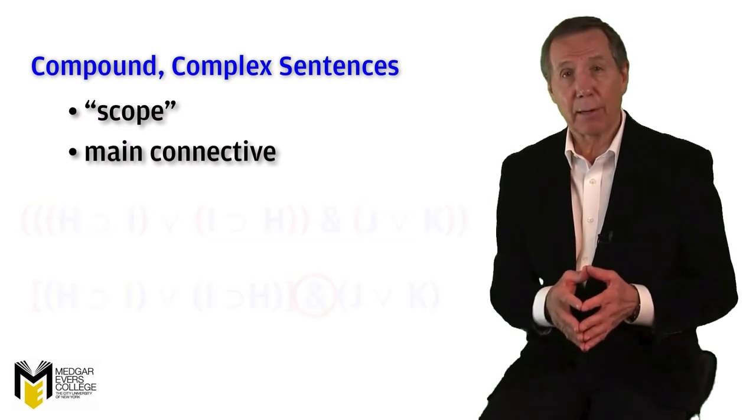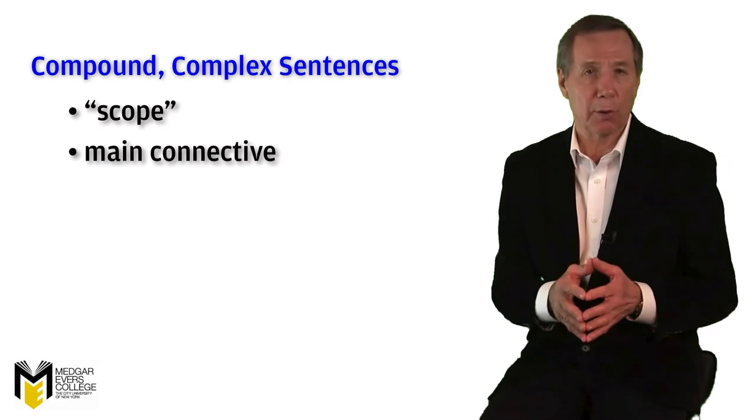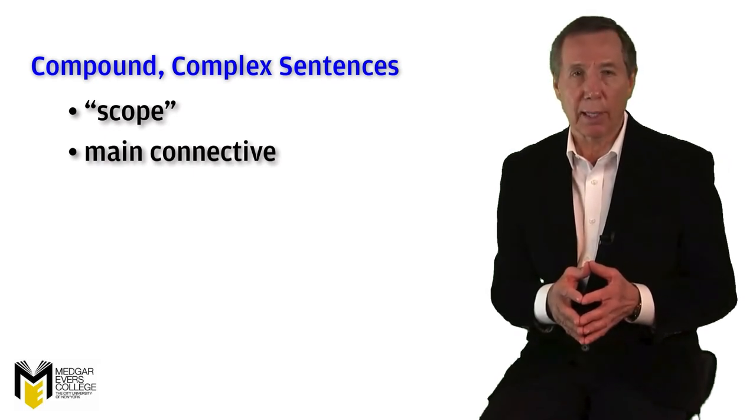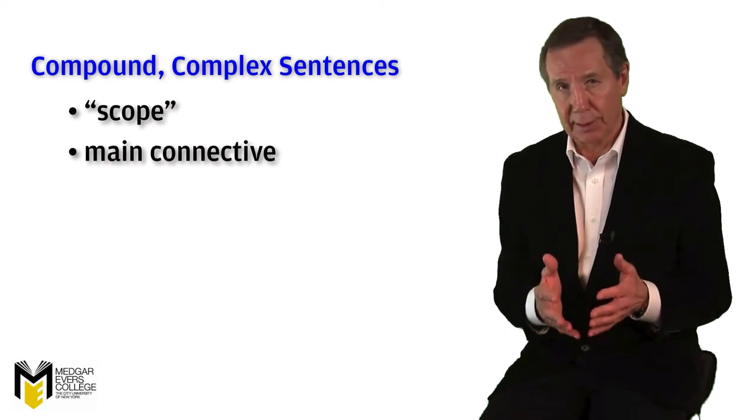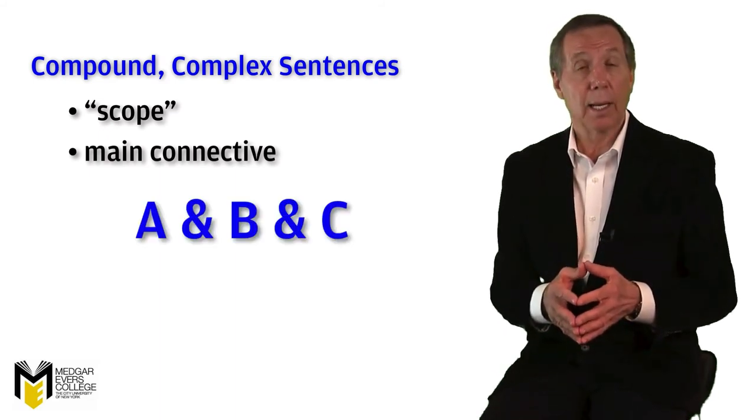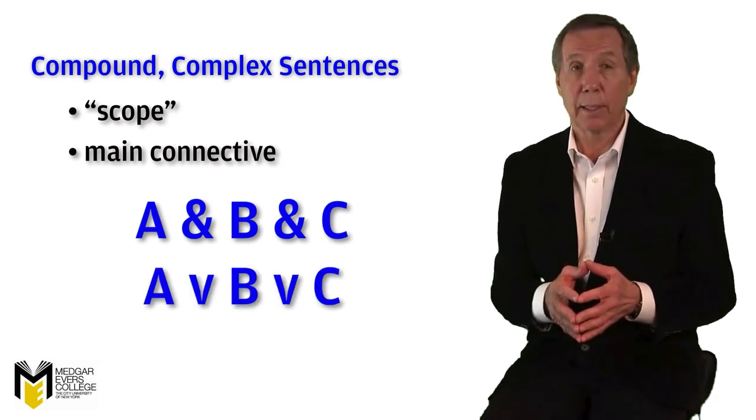Third, as a matter of convention, we can omit parentheses when we can join or disjoin three or more atomic sentences, provided they are not part of a larger compound sentence, as follows: A and B and C, A or B or C.